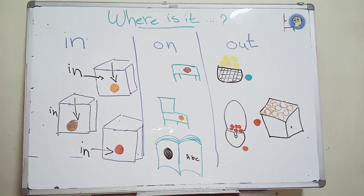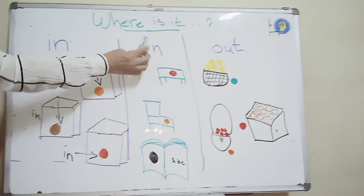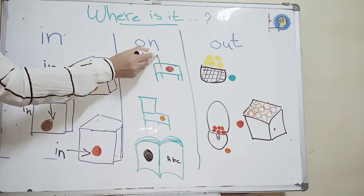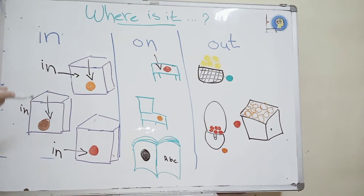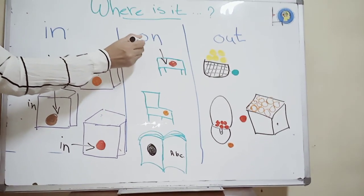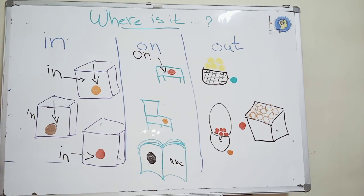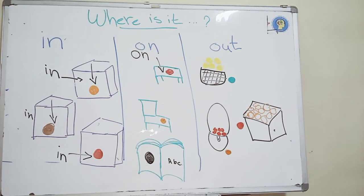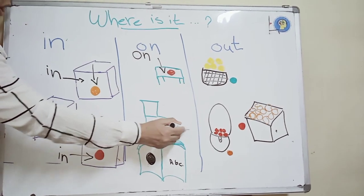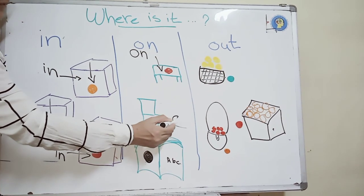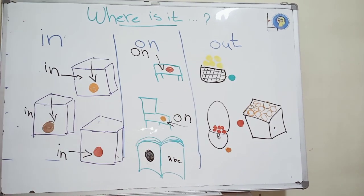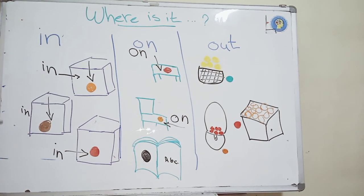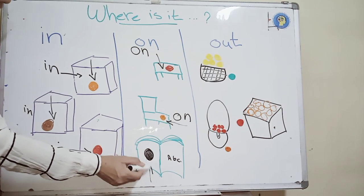Okay, the next example: on. Where is the red ball? The red ball is on the table. Where is the orange ball? The orange ball is on the chair. Where is the black ball? The black ball is on the book.